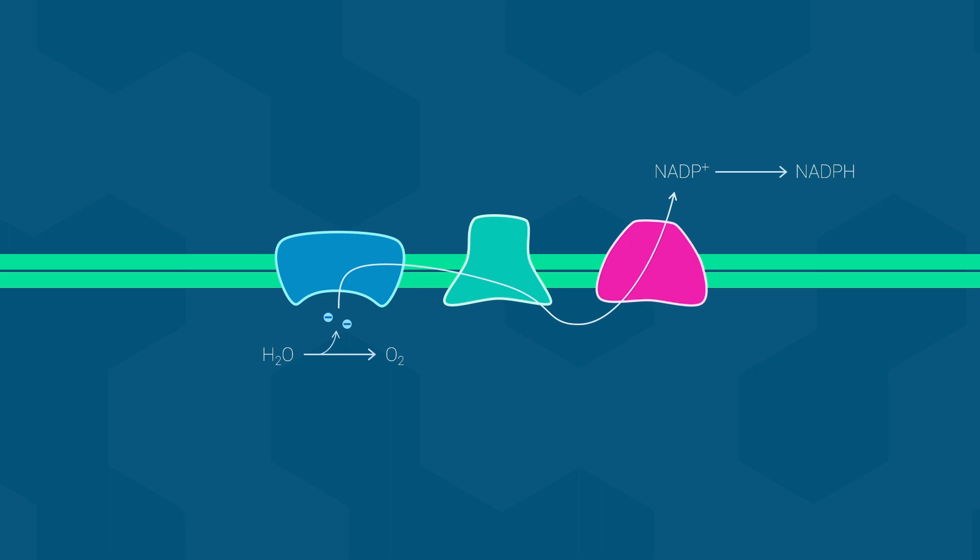If we compare the starting water molecule to the final NADPH electron carrier, this process represents an overall increase in potential energy for the electrons and the molecules, or put another way, the electrons are moving towards molecules with a more negative reduction potential. But how does this happen? The electrons in water molecules have low potential energy, so how can they be used to reduce something with a more negative reduction potential? The answer to that question comes in the form of light energy from the sun.